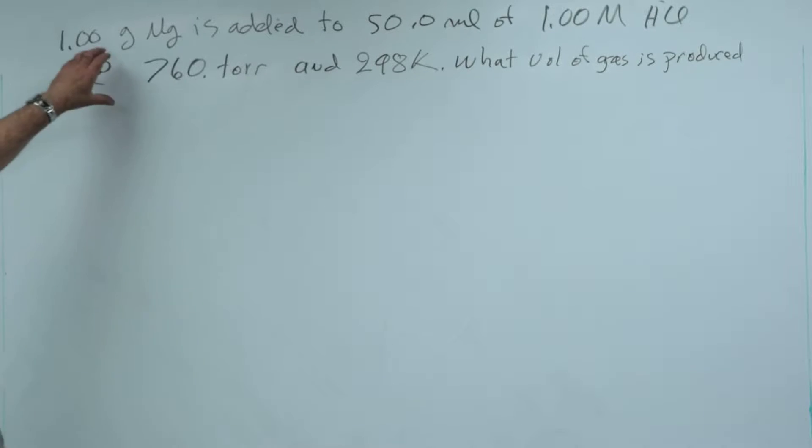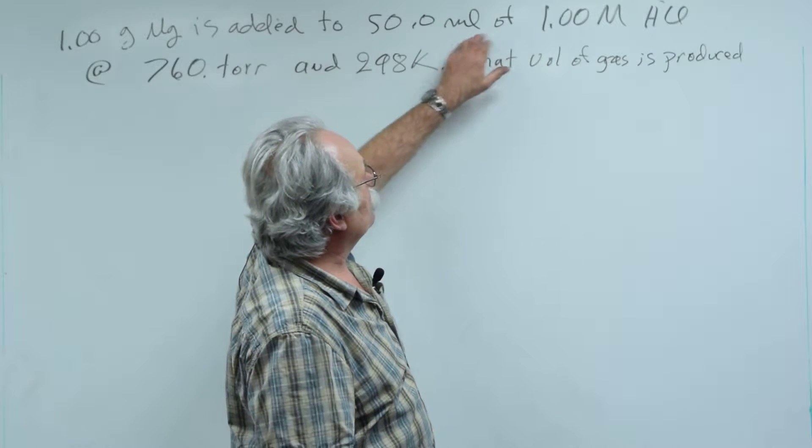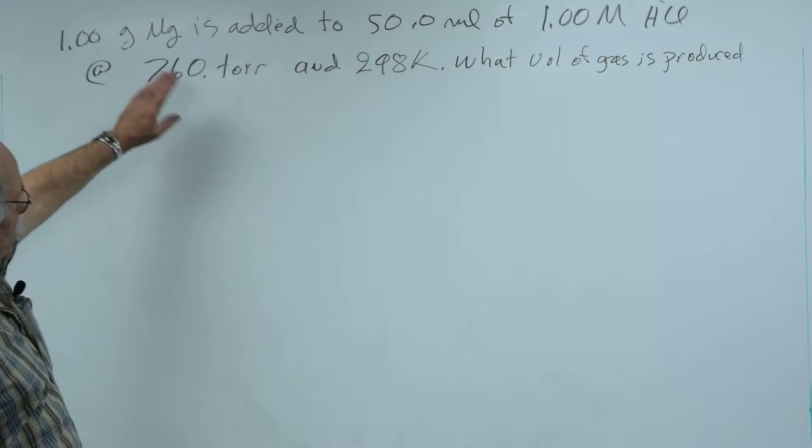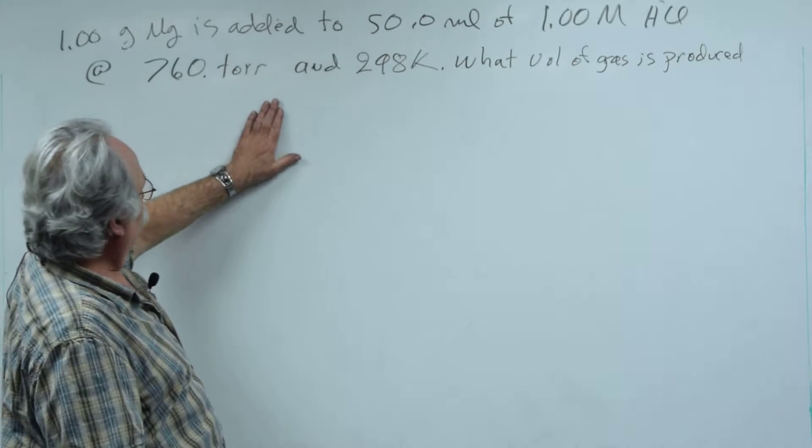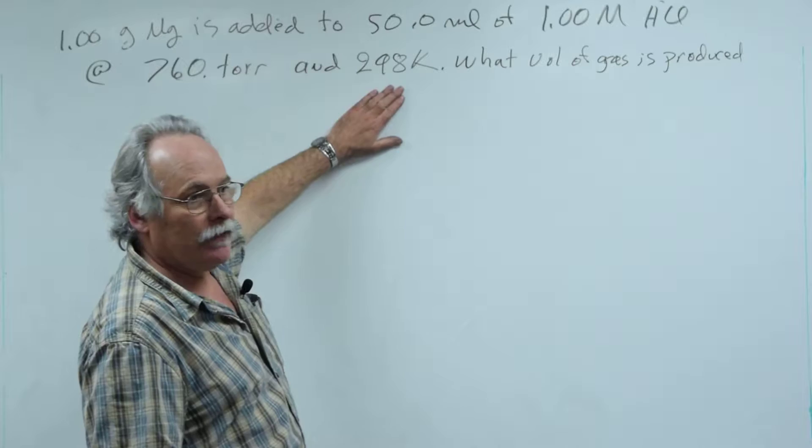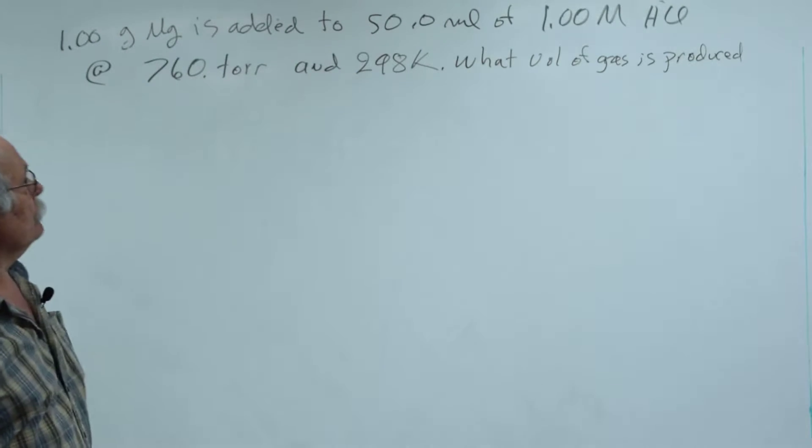Okay, I'm going to take a gram of magnesium and add it to 50 milliliters of 1 molar hydrochloric acid. I'm going to do this at 760 torr and 298 degrees kelvin. And I'm going to ask myself what volume of gas is produced.